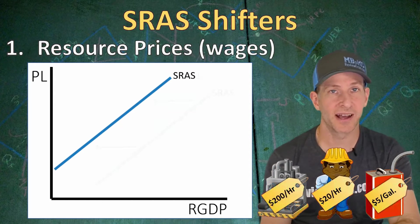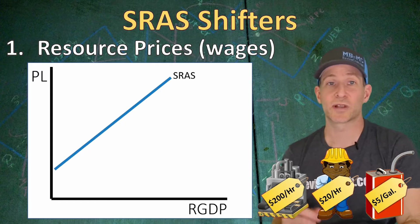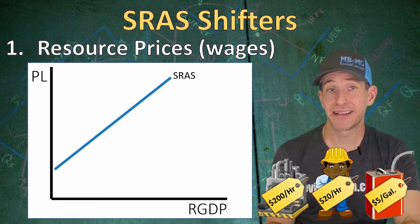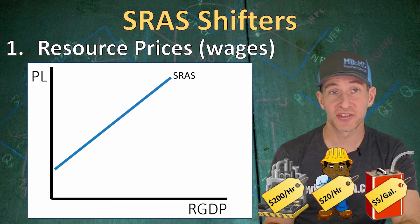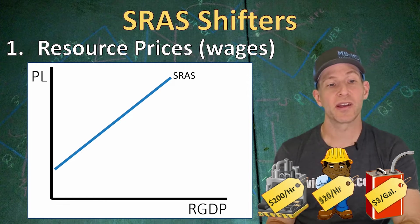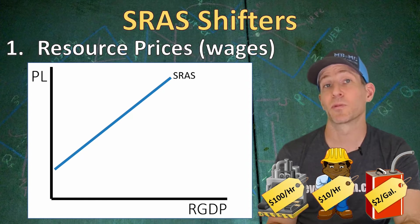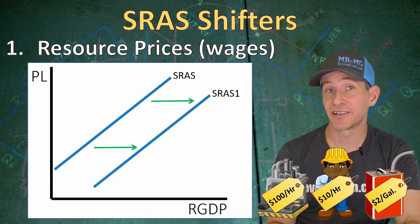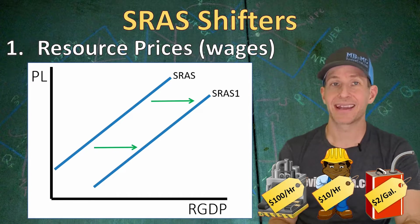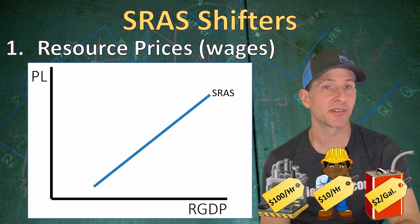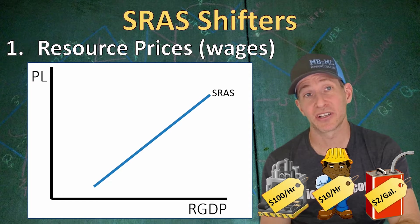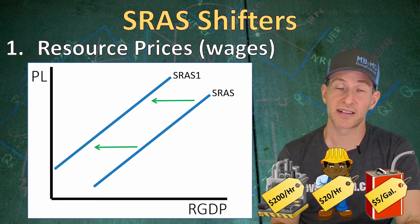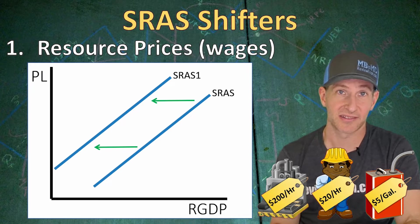The first cause of a supply shock to the economy is resource prices, mostly wages. If we see a decrease in wages or other resource prices, we are going to see a rightward shift of the short run aggregate supply curve, which means we've had an increase in short run aggregate supply. And if wages and other resource prices increase, that's going to shift the short run aggregate supply curve to the left because the increase in resource prices has increased production costs.